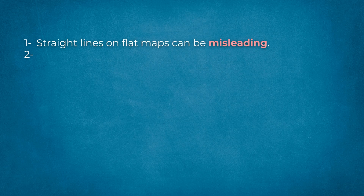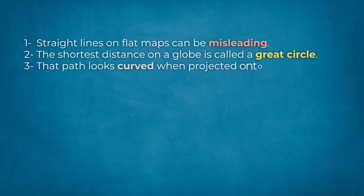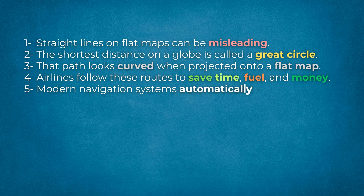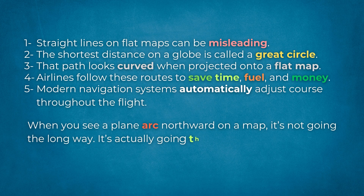To bring it all together: straight lines on flat maps can be misleading. The shortest distance on a globe is called a great circle, and that path looks curved when projected onto a flat map. Airlines follow these routes to save time, fuel, and money. Modern navigation systems automatically adjust course throughout the flight. When you see a plane arc northward on a map, it's not going the long way — it's actually going the most efficient way Earth allows.